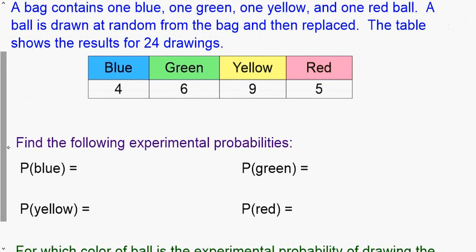A bag contains one blue, one green, one yellow, and one red ball. A ball is drawn at random and then replaced. The table shows the results for 24 drawings, which means n equals 24 — that's our total number of drawings. To find the experimental probability of blue: we got four blue in 24 draws.